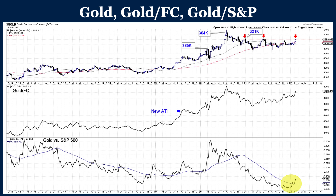Gold against foreign currencies usually moves first. It usually shows strength, and it usually makes a new higher high or a new all-time high first. One example: right in the middle of the chart at the blue arrow, that was a new all-time high in gold against foreign currencies, and it occurred roughly a year before the gold price in dollars. Right now, gold against foreign currencies is roughly within 4% of the all-time high — it's above the 1,950 area, so close to 2,000. It's almost as if gold is very close to 2,000.